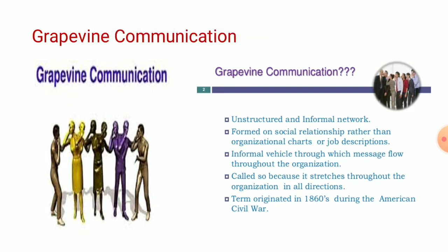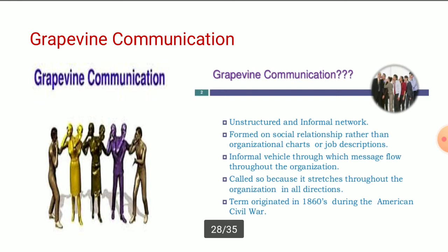This is a way of passing messages using grapevine, which is also called informal communication. It is called so because it stretches throughout the organization in all directions. Once a rumor is generated, it will be passed among all employees in the entire organization. It originated in 1860 in America during the Civil War, and from that point onwards, we call it grapevine communication.